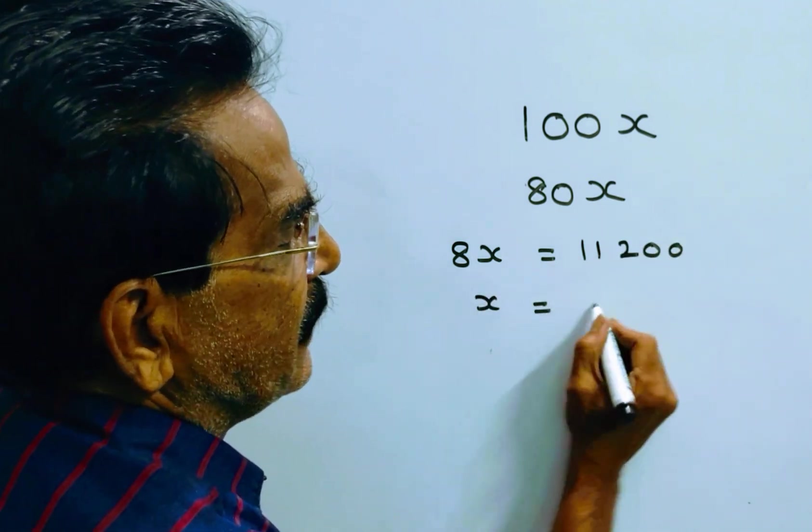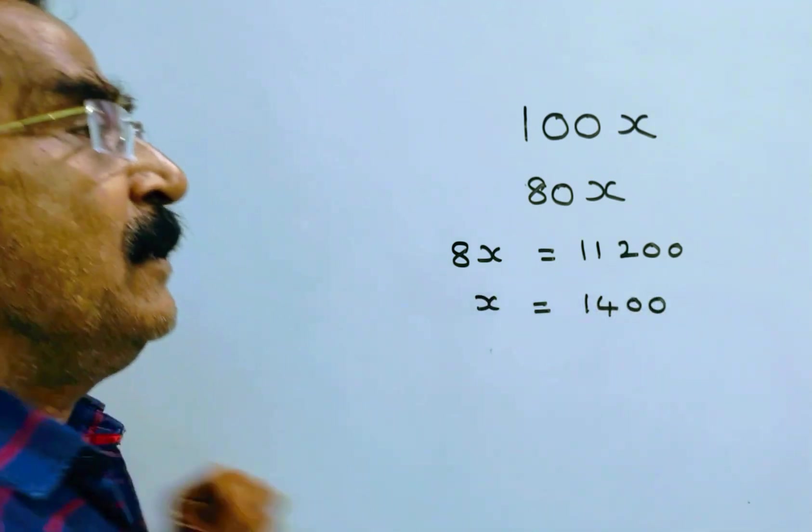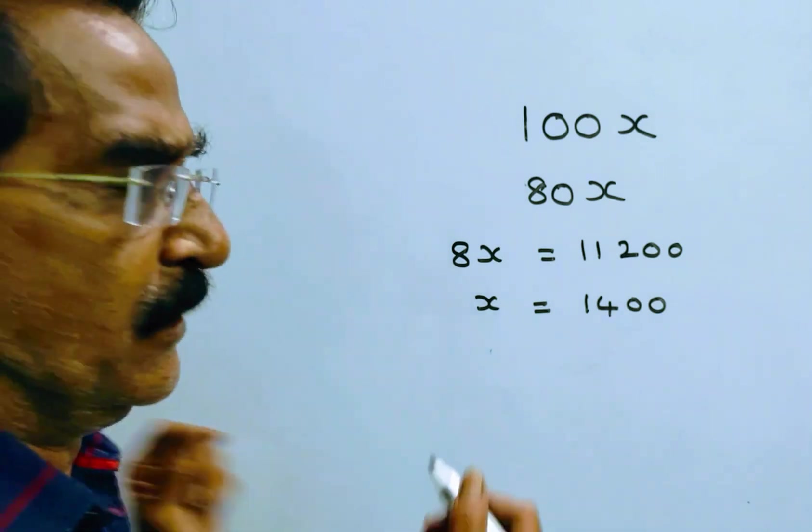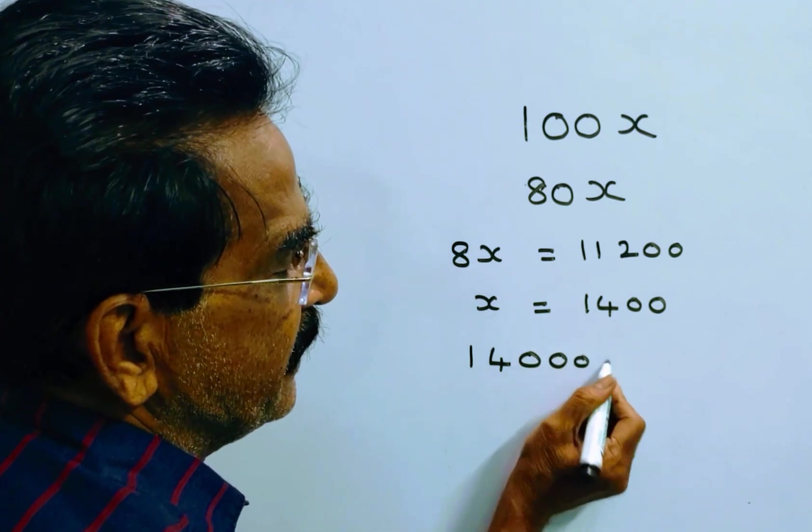X is equal to 1,400. So now the income of ROM is 100x, 100 times 1,400 equals 140,000. This is the income of ROM.